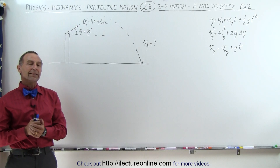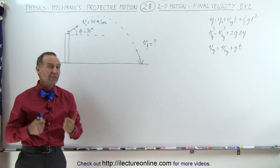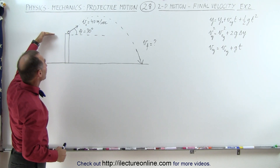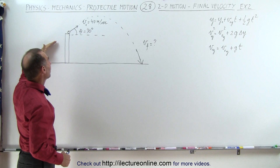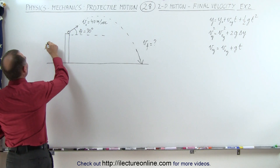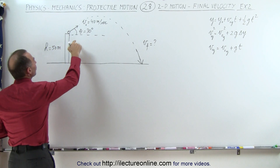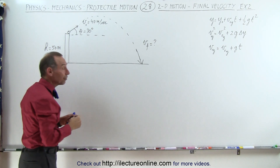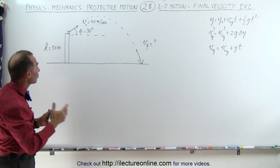Welcome to ElectronLine. Here's an example similar to the previous one, except that instead of throwing the object straight in a horizontal direction, we're now pushing the object off the top of a building where the height is equal to 50 meters, at an angle of 30 degrees relative to the horizontal — that's the initial direction of the projectile.